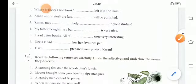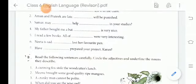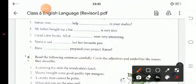Then in the fourth sentence, My father bought me a bat. Full stop. Dash. It is very nice. So, bat is a material. The sentence will be, It is very nice.